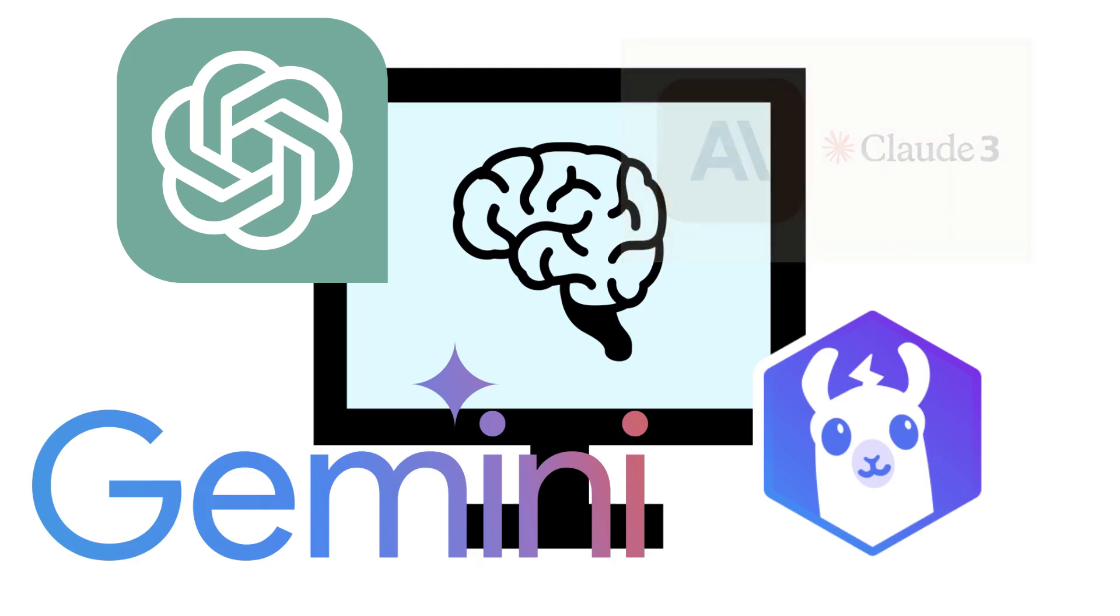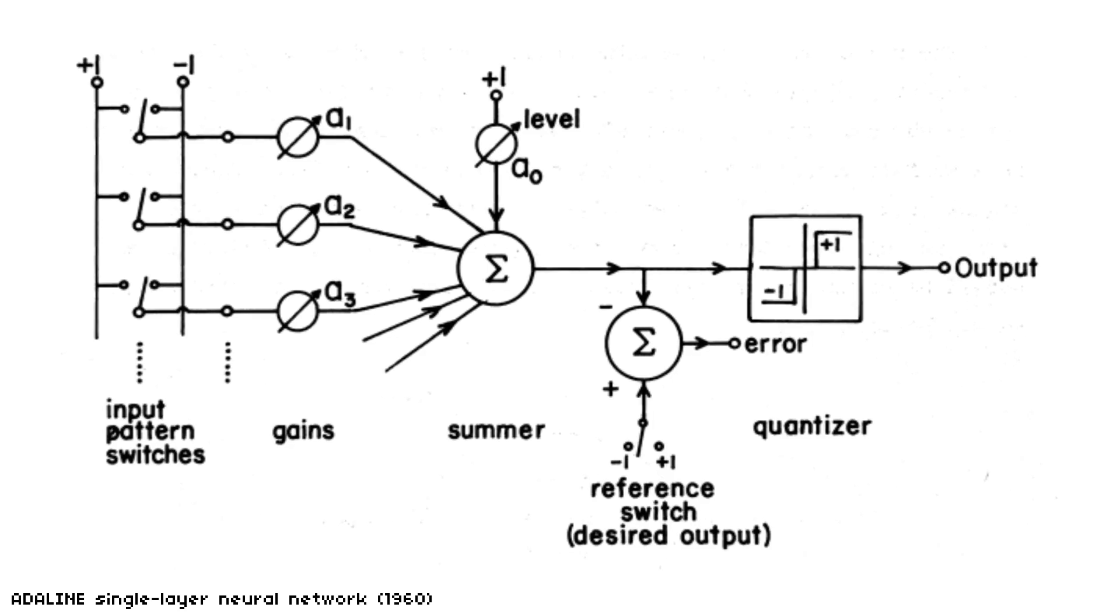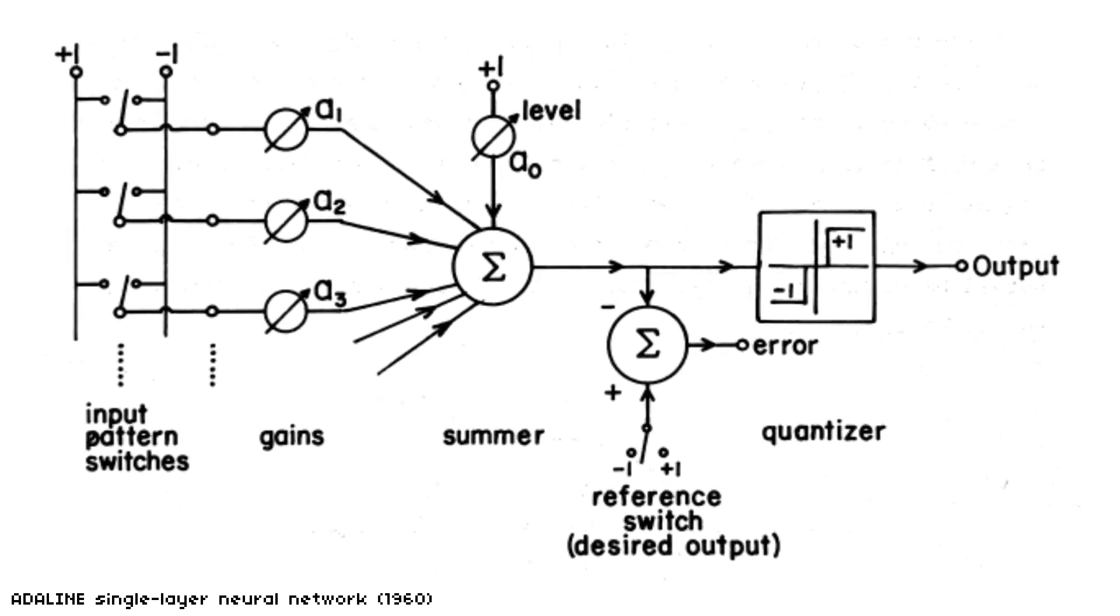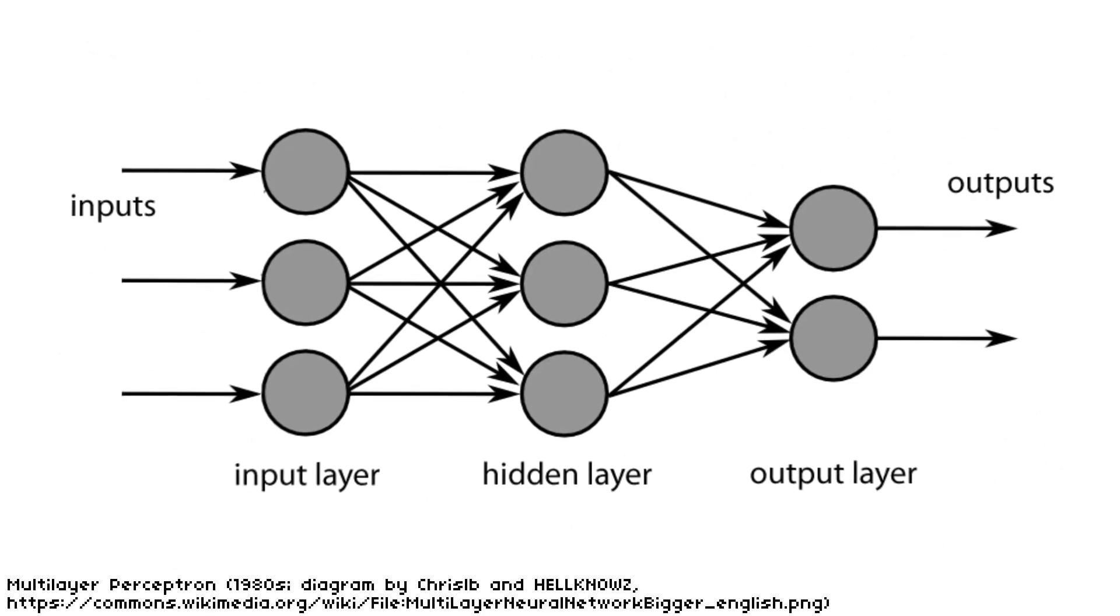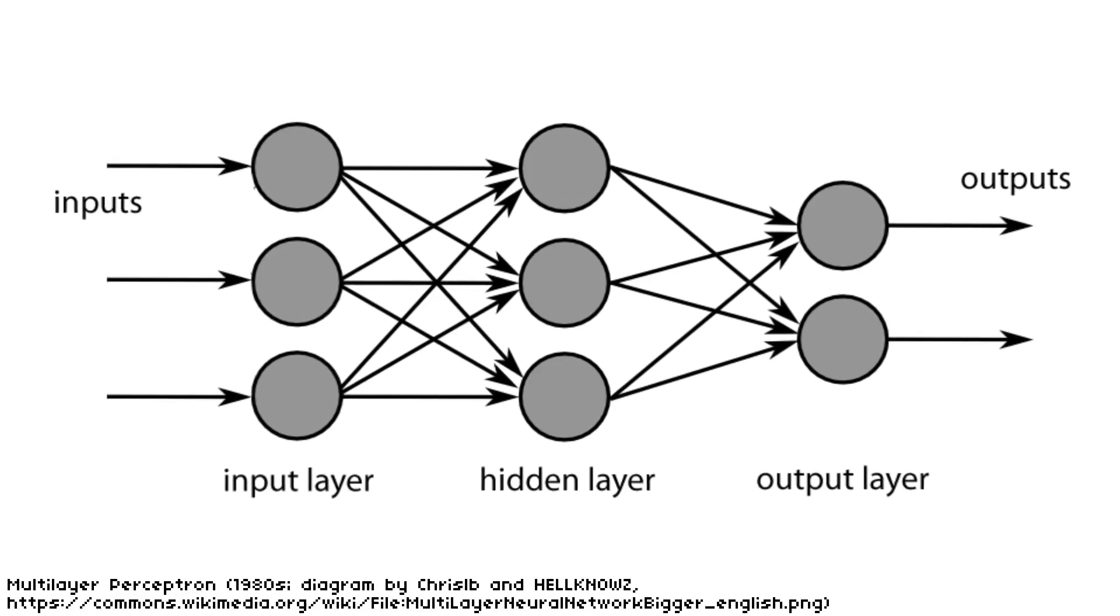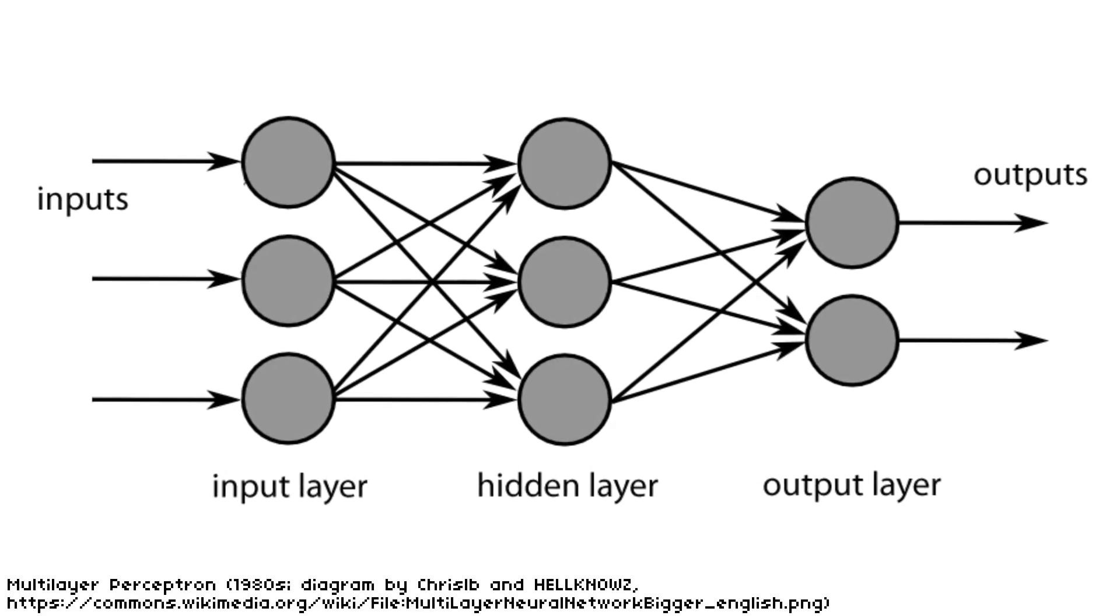As early as the 1940s and 50s, scientists were exploring the biological and scientific theory behind neural networks, and by the 1980s, multi-layer neural networks trained via backpropagation had been introduced.